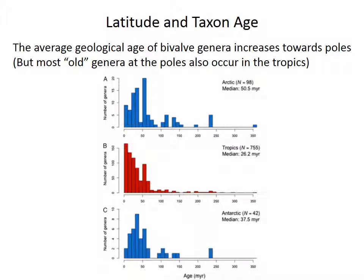The ages of bivalve genera also provide additional evidence. On average, genera that live at the poles — like in the Arctic or the Antarctic — tend to have longer geological durations. On average, these Arctic genera have been around for 50 million years, compared to a duration of only 26 million years for the average tropical genus. But that difference actually suggests that extinction rates are lower at the poles, because the taxa have been around for a longer time — and that's actually the opposite of the prediction from either the tropics as a cradle or the tropics as a museum hypothesis.